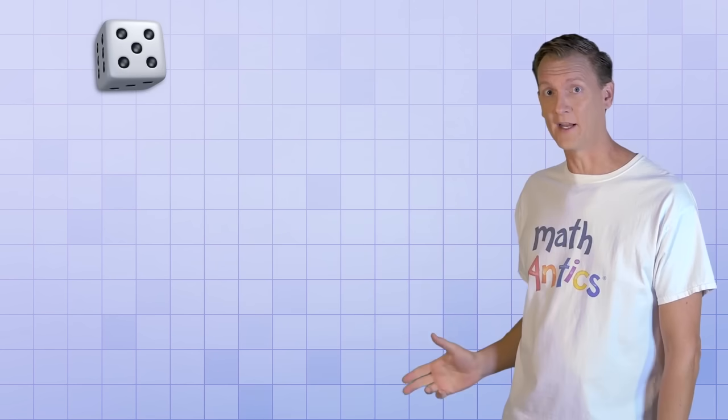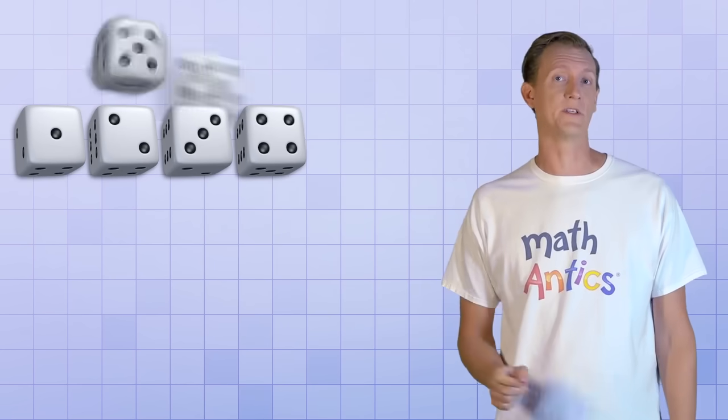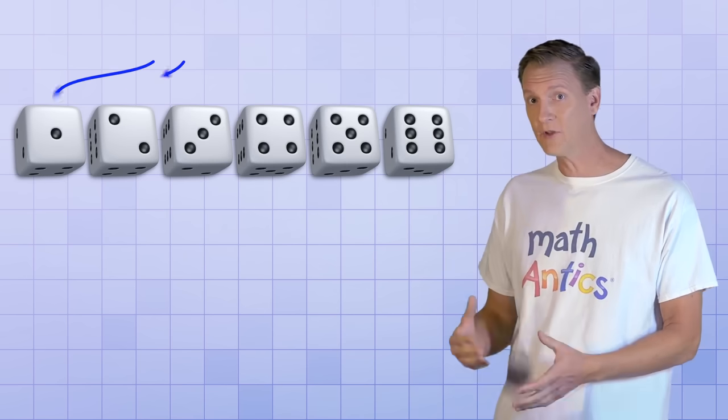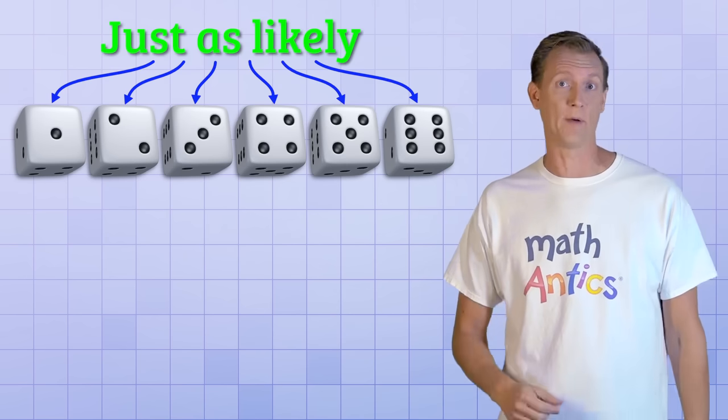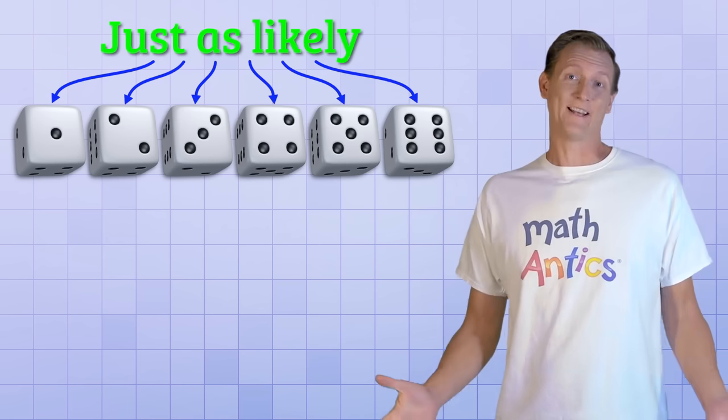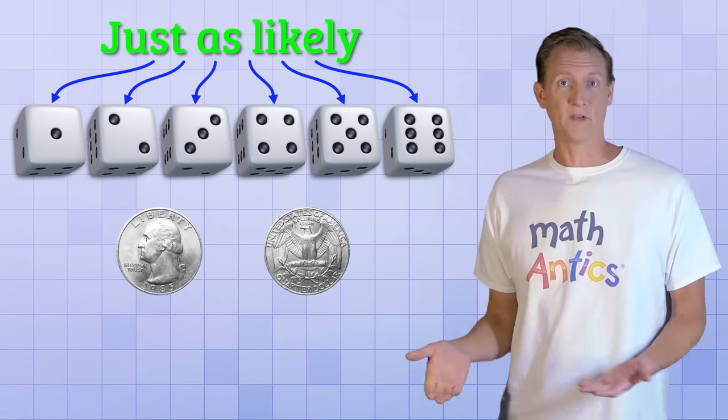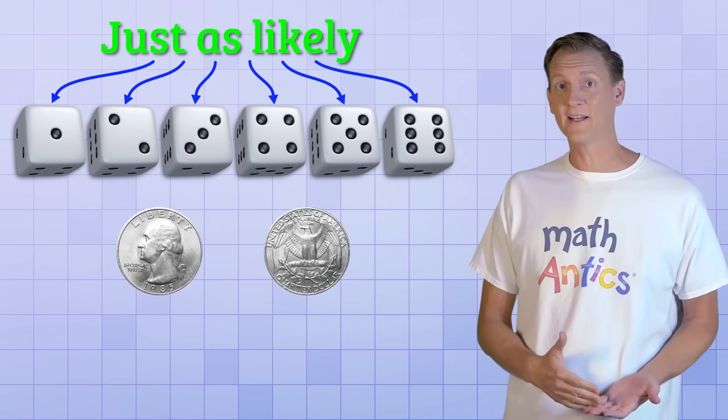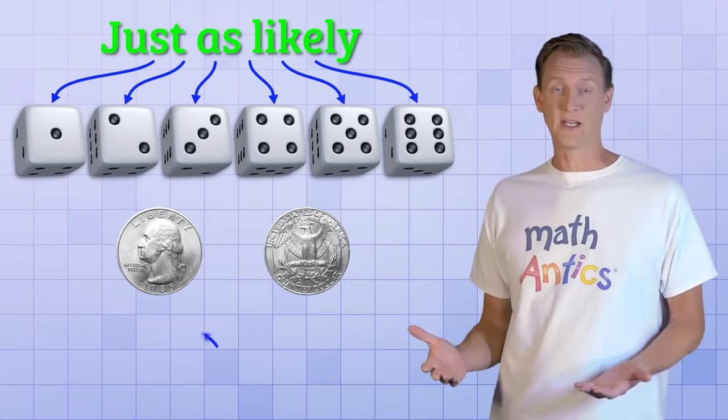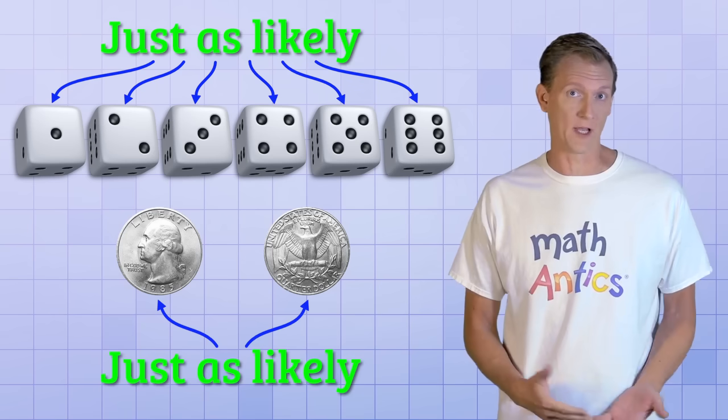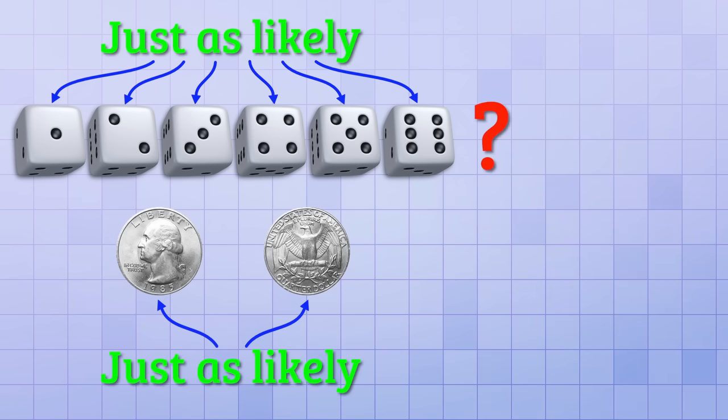Now that you know how a coin toss works, let's see an example of an event that is unlikely, using something a little more complicated than a coin. Let's take a look at dice. A standard die has 6 sides numbered 1 through 6. When you roll it, any of those sides is just as likely to come up as the others. That sounds a lot like flipping a coin, doesn't it? Each side of a die is just as likely to come up as the others, and each side of a coin was just as likely to come up as the other. So you might expect that the probability of rolling a 3 is 50%.